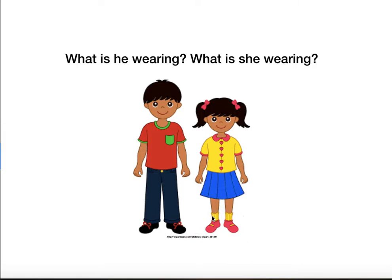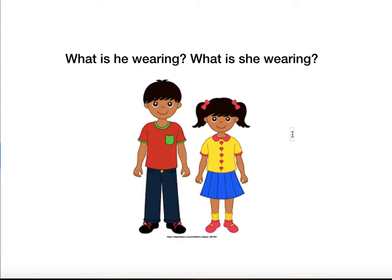What is she wearing on her feet? She is wearing socks that are yellow, and shoes. In her hair is something called a bow — she is wearing two bows in her hair. Sometimes young girls will have a bow in their hair because it is pretty.